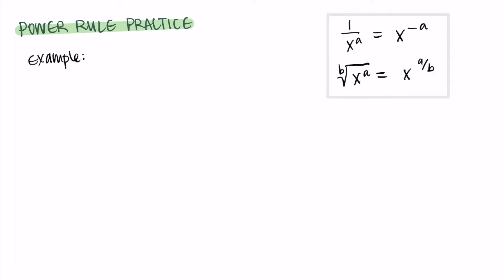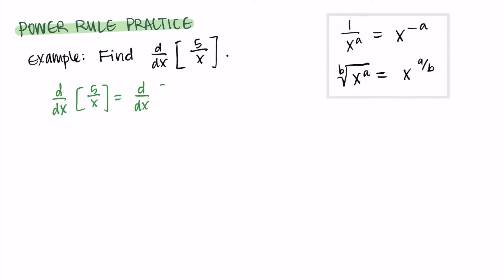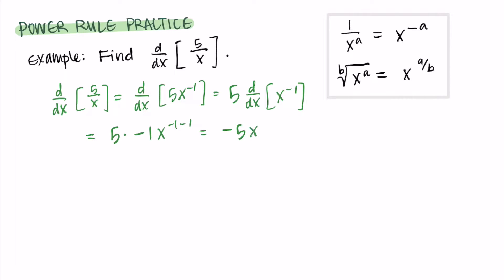For our first example, let's find the derivative with respect to x of five over x. We rewrite this as five times x to the negative one. Using the constant multiple rule, we factor out the five and apply the power rule: the negative one comes out front, giving us negative five times x to the negative one minus one, which is negative five x to the negative two. Writing with positive exponents, the final answer is negative five over x squared.